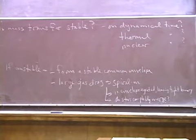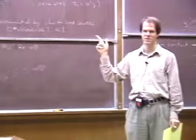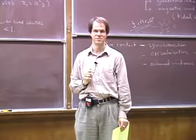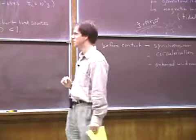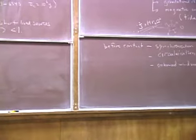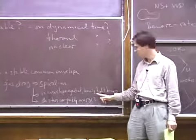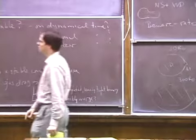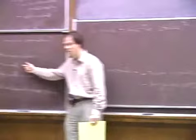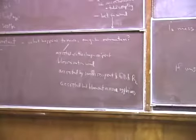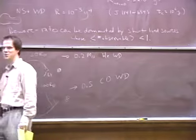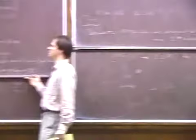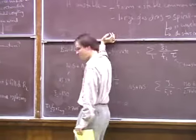There is not one answer to these questions — the answer to every one is 'yes, in some cases.' It happens on the dynamical, thermal, and nuclear timescales. Sometimes a stable common envelope forms, sometimes they spiral in, sometimes the envelope gets ejected, sometimes it doesn't and they merge. It depends on the circumstances and requires detailed analysis, physical intuition, observations, and computer simulations.